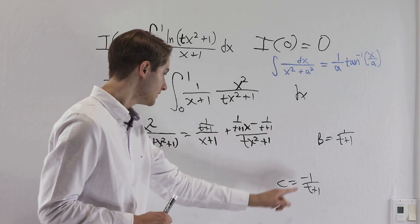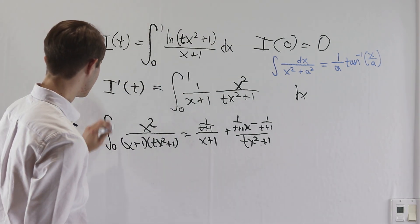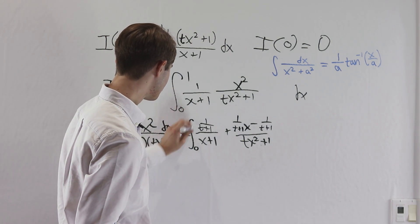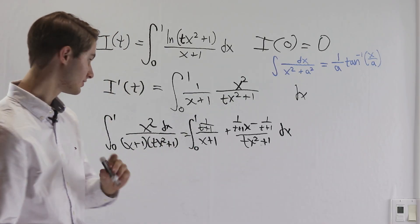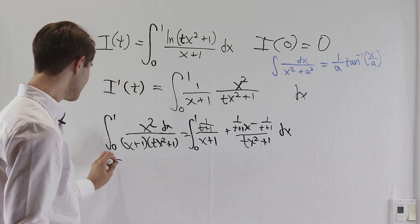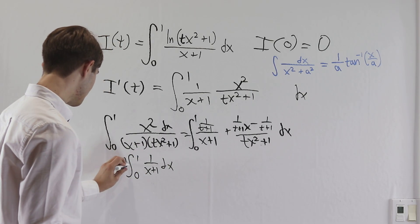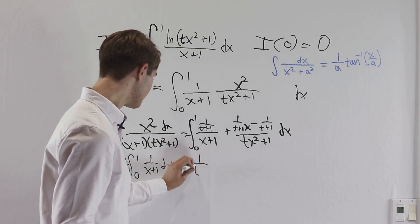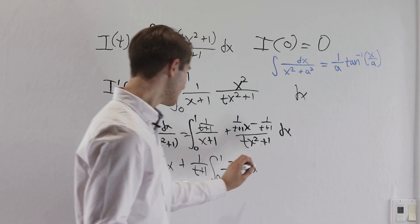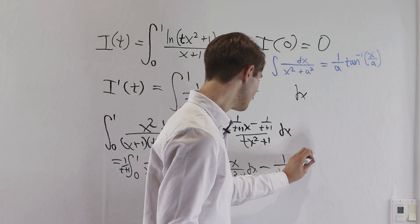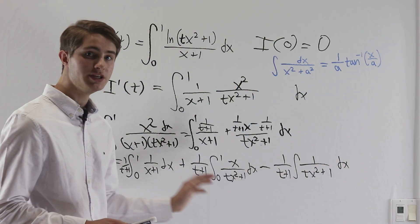With partial fraction decomposition done, we plug in our values and get to integrating. We take the integral from 0 to 1 of the whole expression and split it into three integrals: first, 1 over t plus 1 times the integral of 1 over x plus 1 dx; second, 1 over t plus 1 times the integral of x over t x squared plus 1; and third, minus 1 over t plus 1 times the integral of 1 over t x squared plus 1 dx.